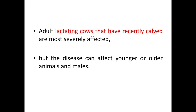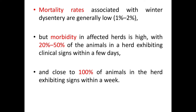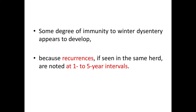Adult lactating cows that have recently calved are the most severely affected group, but the disease can also affect younger, older animals, and males. Morbidity rate is very high — 20-50% of animals in a herd exhibit clinical signs within a few days, and close to 100% within a week. Mortality rates are generally low, about 1-2%. Some degree of immunity appears to develop, as recurrences in the same herd are noted at 1-5 year intervals.